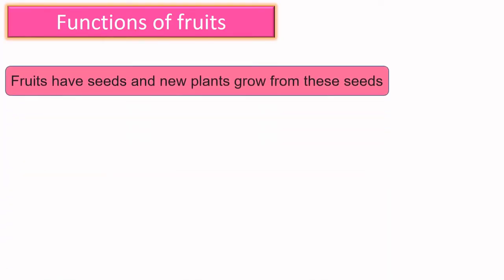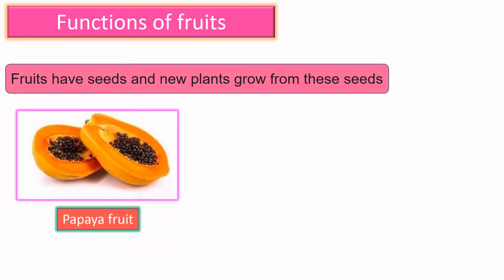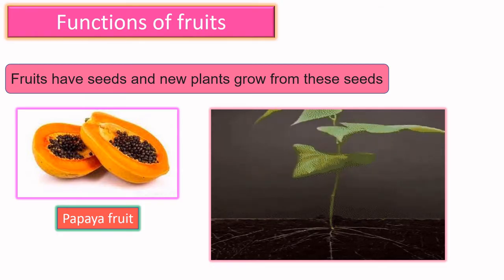Functions of fruits: fruits have seeds, and new plants grow from these seeds. For example, a papaya fruit has black-colored seeds. When we sow these seeds in the soil, a new plant grows.